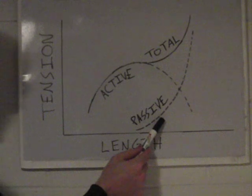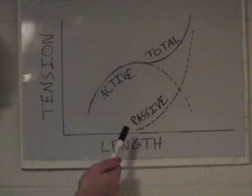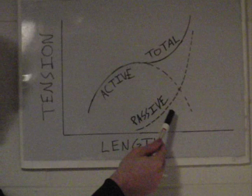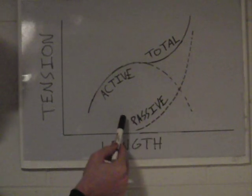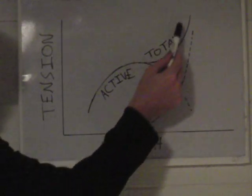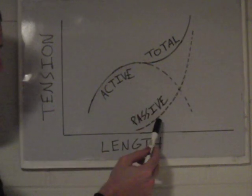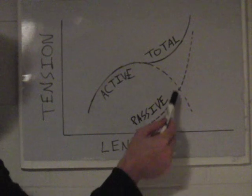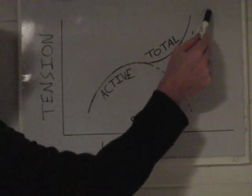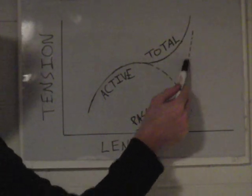This passive tension curve is somewhat dependent on flexibility. If you are tighter, it is going to be shifted further to the left, meaning your total tension goes up quicker. If you are more flexible, this curve would be shifted more to the right, meaning your total tension goes up slower — in fact, you may even have a dip in tension before it goes up.